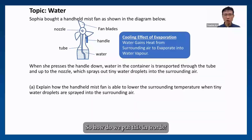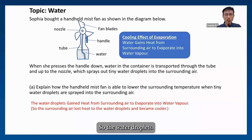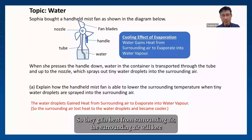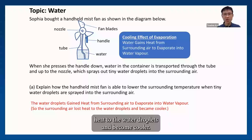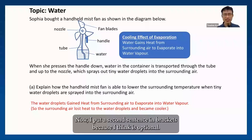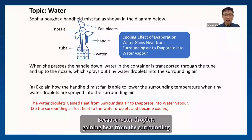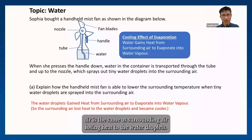So how do we put this in words? The water droplets gain heat from the surrounding air to evaporate into water vapor. When they gain heat from the surrounding air, the surrounding air will lose heat to the water droplets and become cooler. The second sentence is in brackets because it is optional — water droplets gaining heat from the surrounding air is the same as surrounding air losing heat to the water droplets.